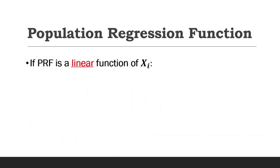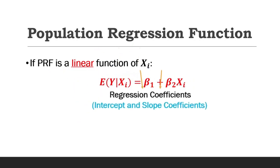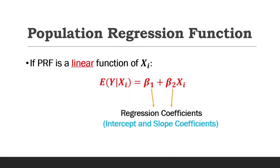If we assume that the population regression function is some linear function of x, then an econometric model to satisfy this assumption is shown on the screen where beta1 and beta2 are known as regression coefficients, or otherwise known as the intercept and slope coefficients respectively.